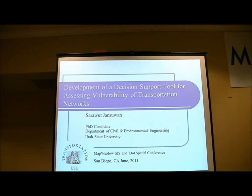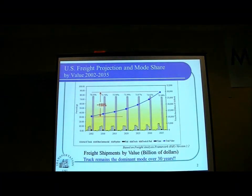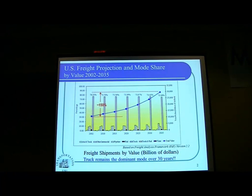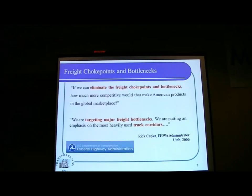Today I would like to share the experience of MapWindow with you. So what is the vulnerability related to assets? We focus on freight transportation. From 2002 to 2035, freight transportation has more than doubled. The mode that shares the largest percentage is truck transportation. Disruptions to freight transportation will contribute very negative consequences to the United States economy.